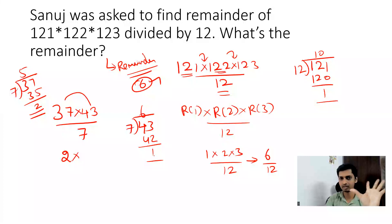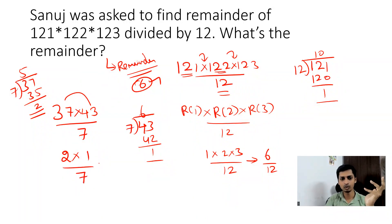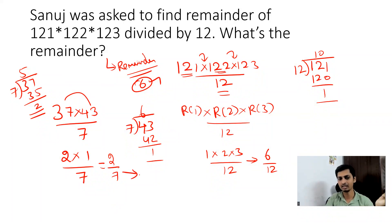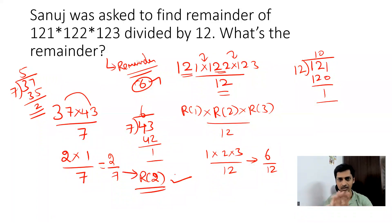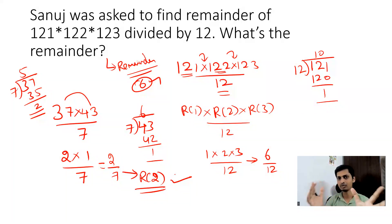For 43 ÷ 7: 6 × 7 = 42, so the remainder is 1. Now 2 × 1 = 2. Since 2 is less than 7, the remainder is 2. It looks very simple.